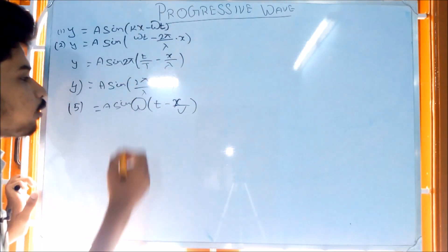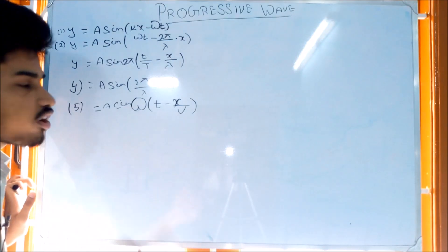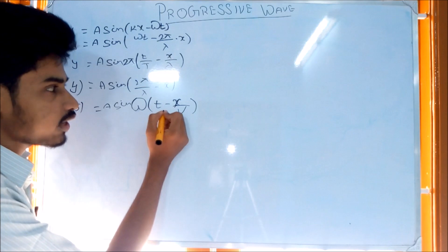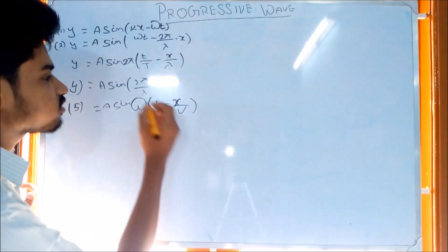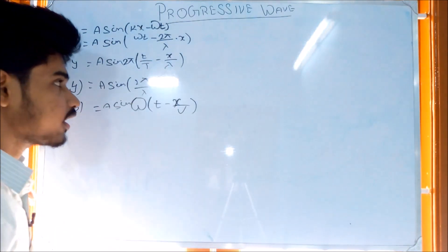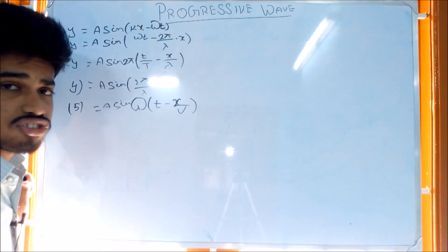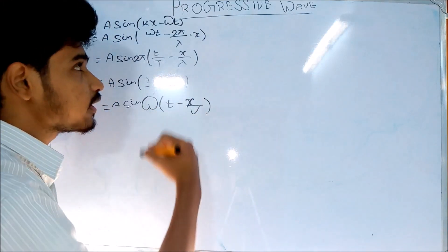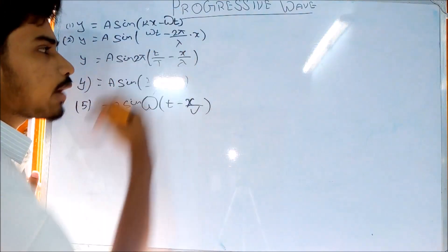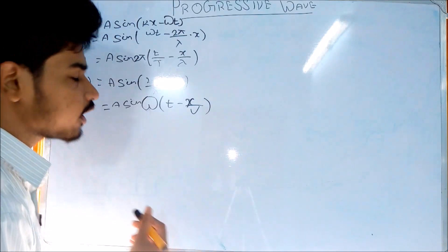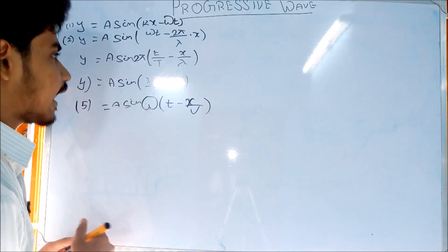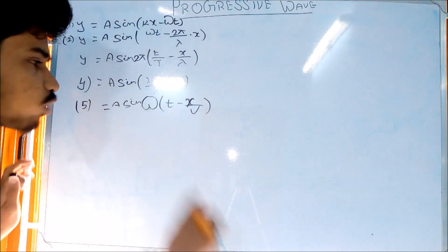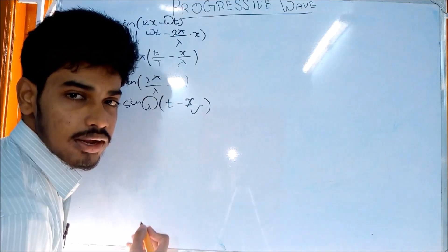Here, 'a' is the amplitude of the wave. The function is sin or cos. Omega (ω) is the phase-related angular term. 't' is time, '2π' represents full oscillations, lambda (λ) is wavelength corresponding to x, and k is the wave number, also known as the propagation constant.